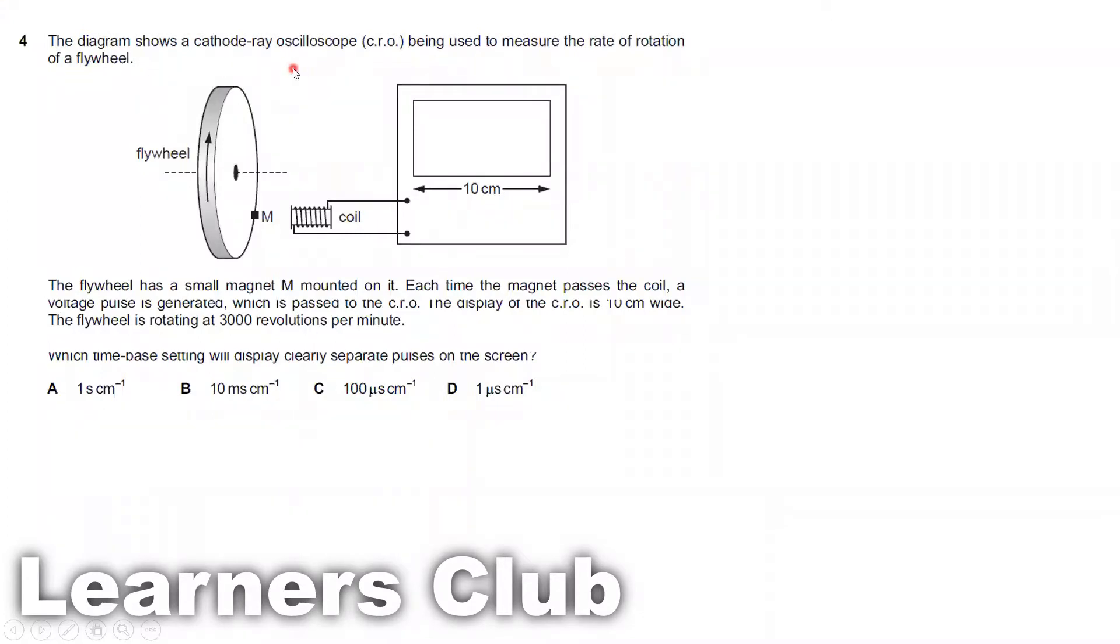The diagram shows a cathode ray oscilloscope being used to measure the rate of rotation of a flywheel. The flywheel has a small magnet M mounted on it. Each time the magnet passes the coil, a voltage pulse is generated which is passed to the CRO. The display of the CRO is 10 centimeter wide, and the flywheel is rotating 3000 revolutions per minute.